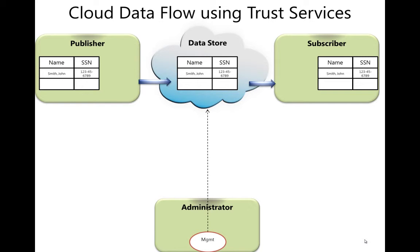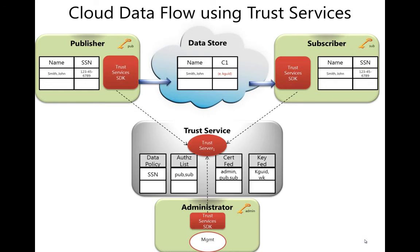In this picture we're looking at three green boxes: the administrator, the data publisher, and the data subscriber. In the middle we have the cloud that is supposed to host the sensitive data. Microsoft Codename Trust Services provides a cloud-based service that contains a portal, a web service endpoint, and an SDK that is going to be used by these three actors.